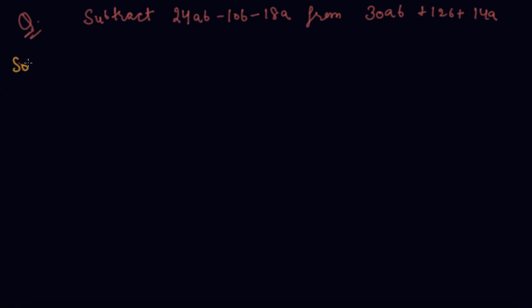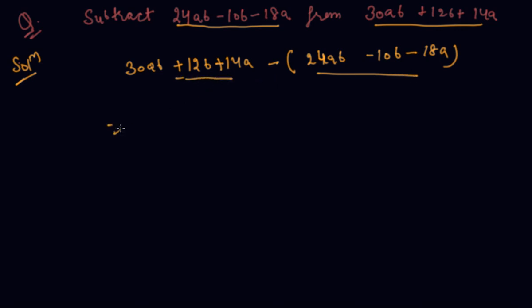So student, here is the question which states that subtract this from this. So what I will write? 30AB... means the second expression first from which we have to subtract. So the statement means we have to subtract this from this.